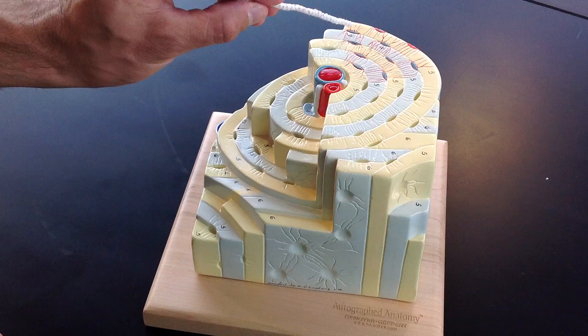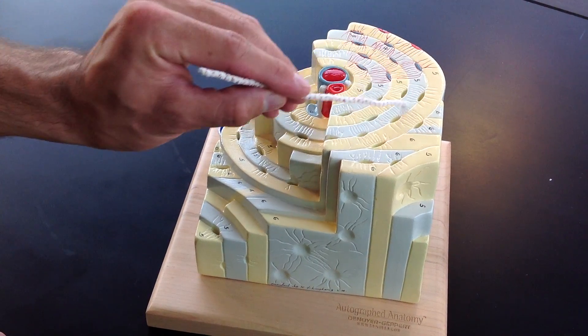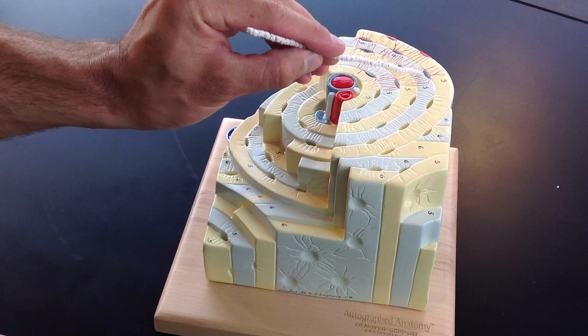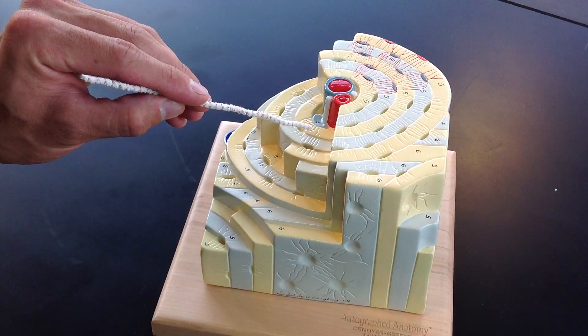Next you're going to need to know these concentric lamellae which run around the Haversian canal.